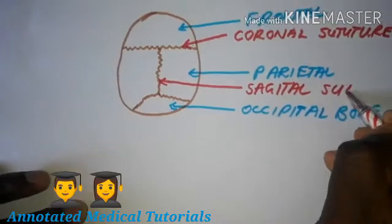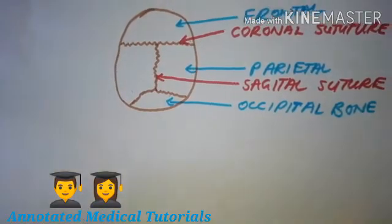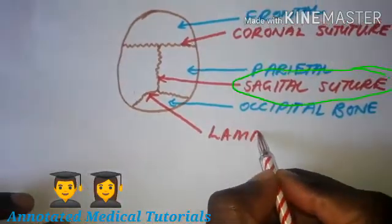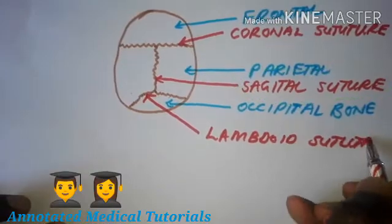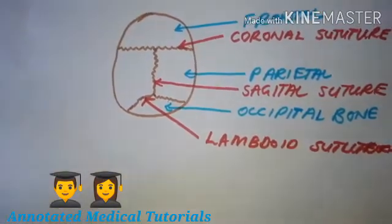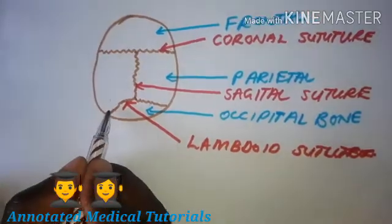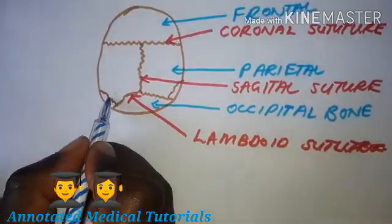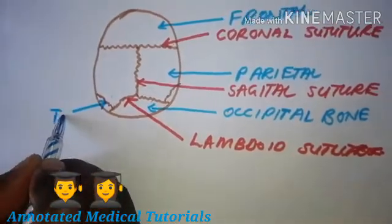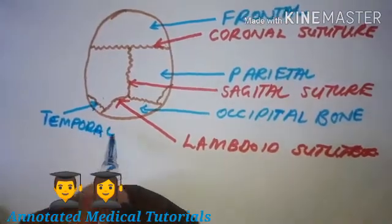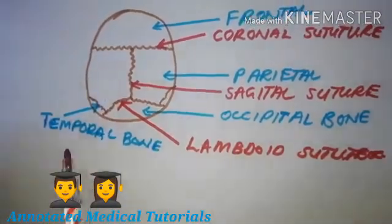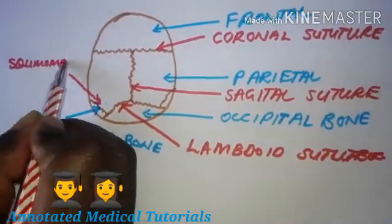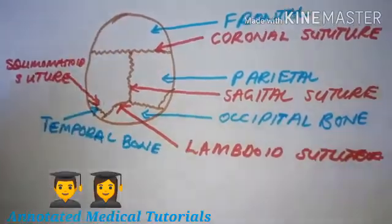We have a suture separating the two parietal bones from each other — we call it the sagittal suture. The suture that separates the two parietal bones from the occipital is called the lambdoid suture. There is also a suture visible on the lateral aspect that separates the temporal bone from the parietal bones; this suture is called the squamous mastoid suture.